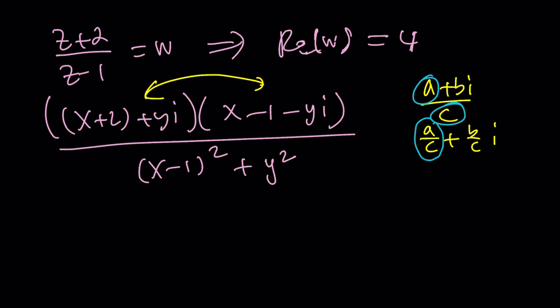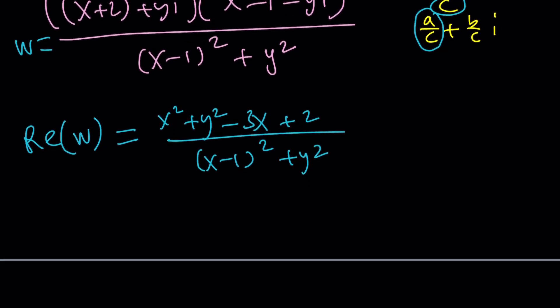Without further ado, the real part of W is just going to be (X squared plus Y squared minus 3X plus 2) divided by ((X-1) squared plus Y squared). That is going to be our real part. And we want this to equal 4.